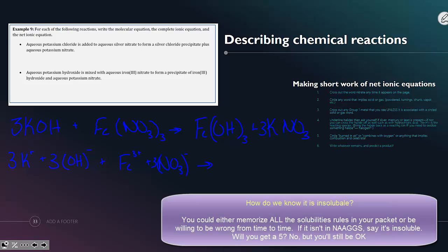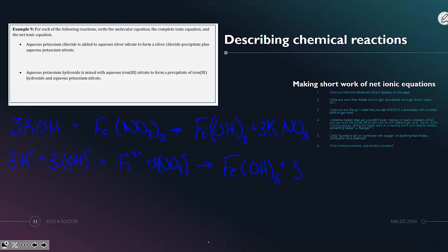Iron hydroxide, however, is insoluble, so we will leave it together. Iron 3 hydroxide stays together and our three potassium nitrates make three potassium cations and three nitrate anions.